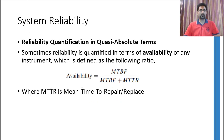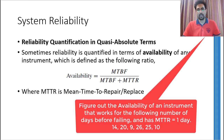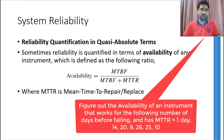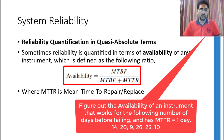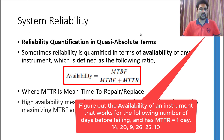In the previous examples, we supposed that whenever an instrument fails, it has been repaired on the same day. But this seldomly happens in real life. Therefore, we need to consider the mean time to repair or replace the instrument while calculating reliability. In such cases, the term reliability is sometimes replaced with availability, defined using a formula. Maximizing mean time between failures and minimizing mean time to repair or replace will increase the availability of the instrument.